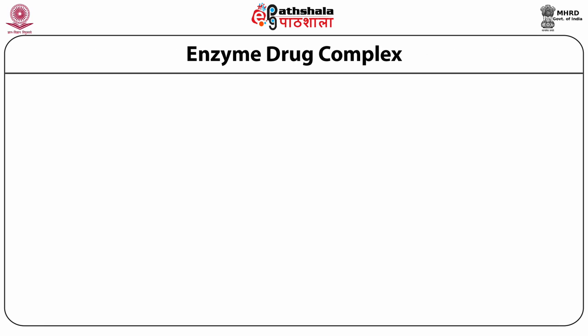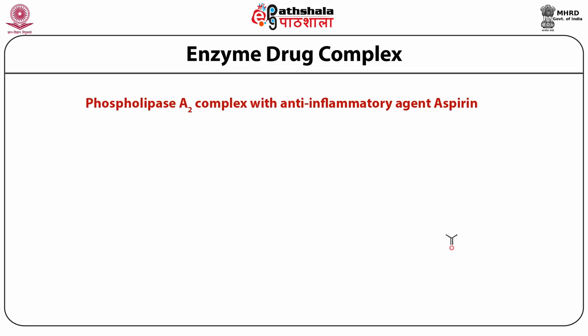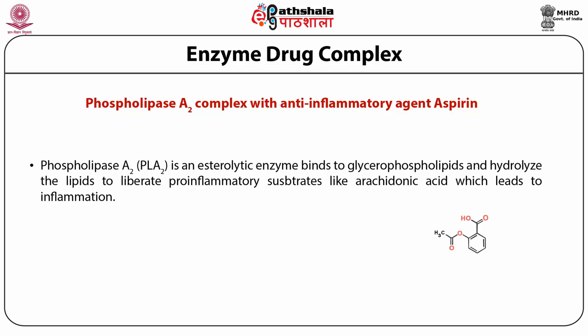Enzyme-drug complex: here we see an example of phospholipase A2 complex with the non-steroidal anti-inflammatory agent aspirin. Phospholipase A2 is a lipolytic enzyme that binds to glycerophospholipids and hydrolyzes the lipid to liberate pro-inflammatory substrates like arachidonic acids, which leads to inflammation. These arachidonic acids are further processed by inflammatory pathway enzymes and produce substrates called prostaglandins, which are called eicosanoids — these cause physiological effects in diseases like rheumatoid arthritis and asthma. Researchers are working on these enzymes to design drugs against this enzymatic pathway.